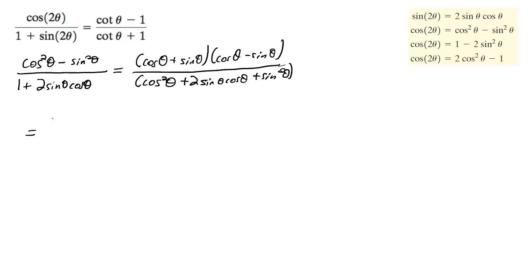We're going to rewrite this again. So on the top, I've got cosine theta plus sine theta, cosine theta minus sine theta. And on the bottom, we're going to have cosine theta plus sine theta, cosine theta plus sine theta.